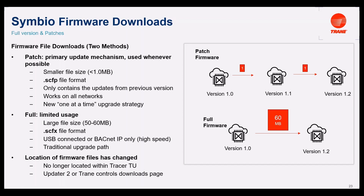The other available file to upgrade the firmware is using a full version. This full version is a large file size — we are talking about 50 to 60 megabytes on average. The format of this file is SCFx, and the only way to do this upgrade is using a USB connection or BACnet AP connection. You can go, for example, from version 1 directly to version 1.2 with this 60 megabyte file. This is the difference between patches and full version.